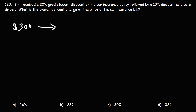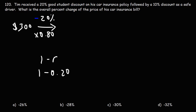He receives a 20% discount, so we put a negative sign to that. This is a one-minus situation: 20% is 0.20, and one minus 0.20 is 0.80. To get the new price, we multiply 300 by 0.80. So after the first 20% discount, his car insurance bill will be $240.